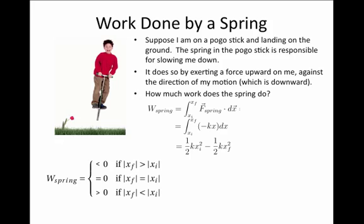So if we compress a spring from an initial x location of zero, in other words, at its rest length, and compress it by one centimeter, that means xf in absolute value will be greater than xi, even though xf will be minus one centimeter. This results in work being less than zero.